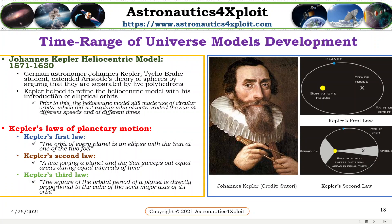John Kepler heliocentric model: Chairman astronomer John Kepler, Tycho Brahe's student, extended Aristotel's theory of spheres by arguing that they are separated by five polyhedrons. Kepler helped to refine the heliocentric model with its introduction of elliptical orbits. Prior to this, the heliocentric model still made use of circular orbits, which did not explain why planets orbit the sun at different speeds and at different times. Kepler's law of planetary motion — First law: the orbit of every planet is an ellipse, with the sun at one of the two foci. Second law: a land joining a planet and the sun swoops out equal areas during equal intervals of time. Third law: the square of the orbital period of a planet is directly proportional to the cube of the semi-major axis of its orbit.